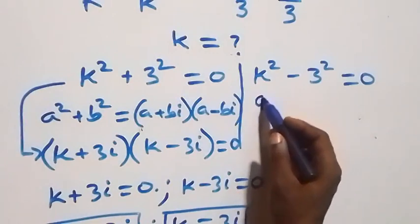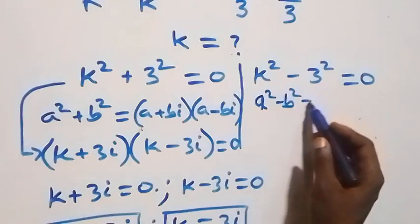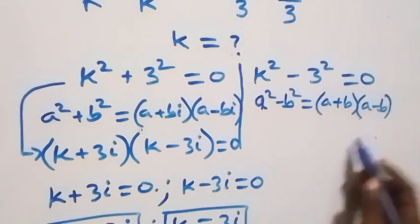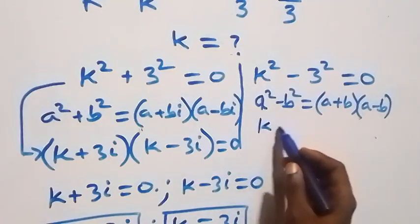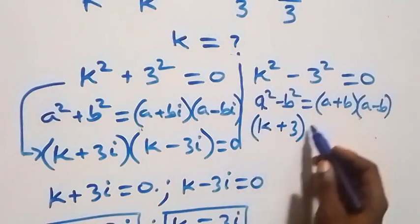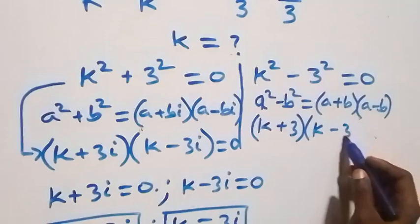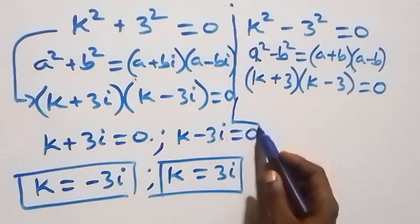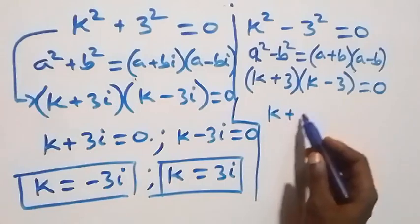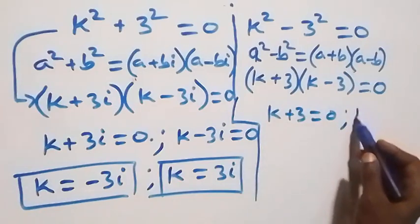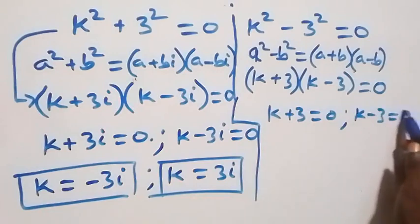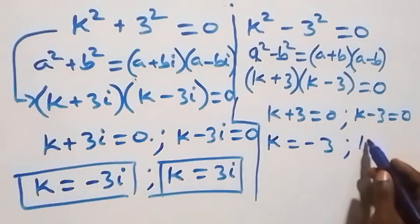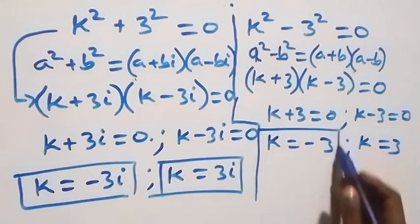Also solving the second case, we apply the difference of squares identity: a squared minus b squared equals open bracket a plus b close bracket times open bracket a minus b close bracket. This becomes open bracket k plus 3 close bracket times open bracket k minus 3 close bracket equals zero. We get two cases: k plus 3 equals zero, or k minus 3 equals zero. That gives k equals minus 3 and k equals 3.